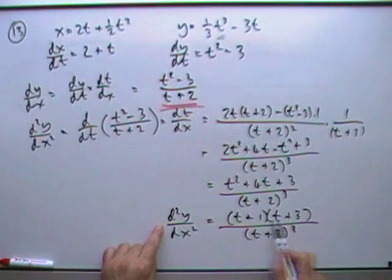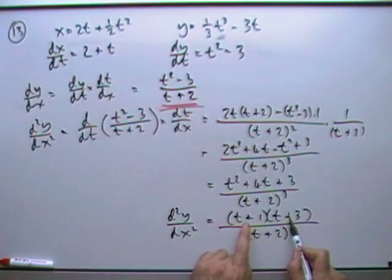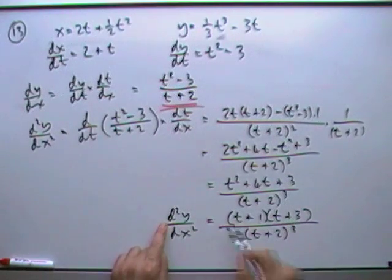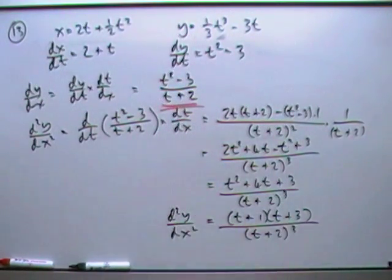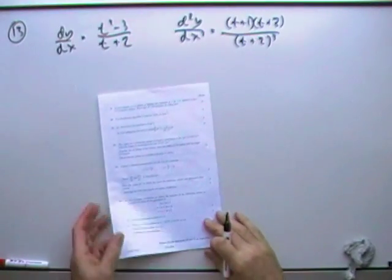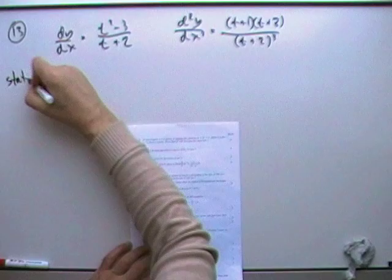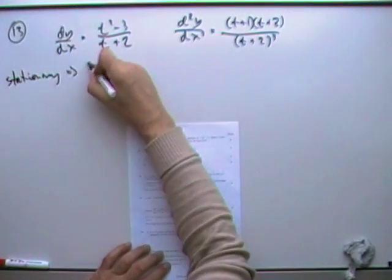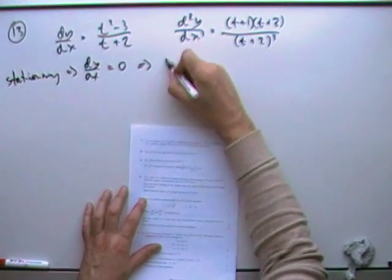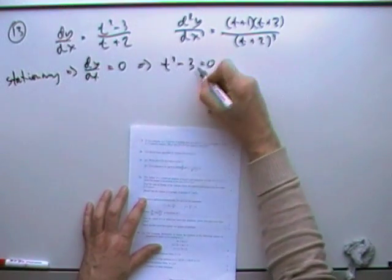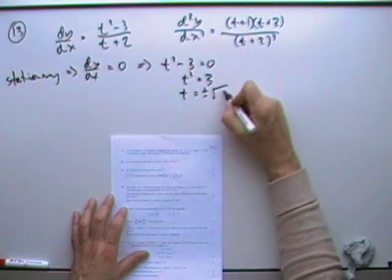Straight away you can see, having a factorization there in the numerator, having these two brackets means there'll be two values of t which will give a value of 0 for the second derivative, so there's going to be two points of inflection, but that's later on. Now, the next bit: find the values of t for which the curve is a stationary point. Well, it'll be stationary if dy by dx equals 0, which means that it's sufficient for the numerator to equal 0, so straight away you can see t is going to be plus or minus root 3.